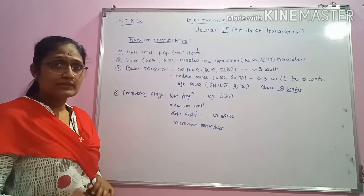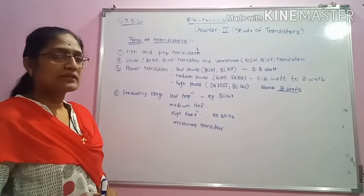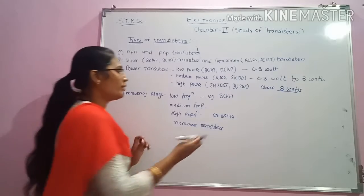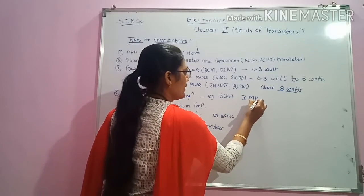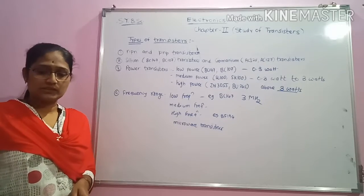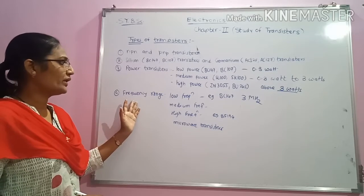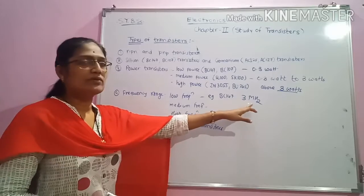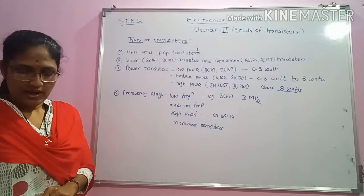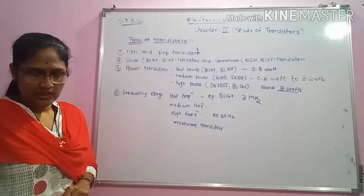The last type of transistor classification is based on the frequency of operation. There are transistors which operate in the frequency range below 3 megahertz and they are called low frequency transistors. Their example is BC147.